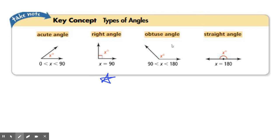Obtuse angles, between 90 and 180. And then, you have your straight angle, which is 180 degrees. Straight angles are also lines.